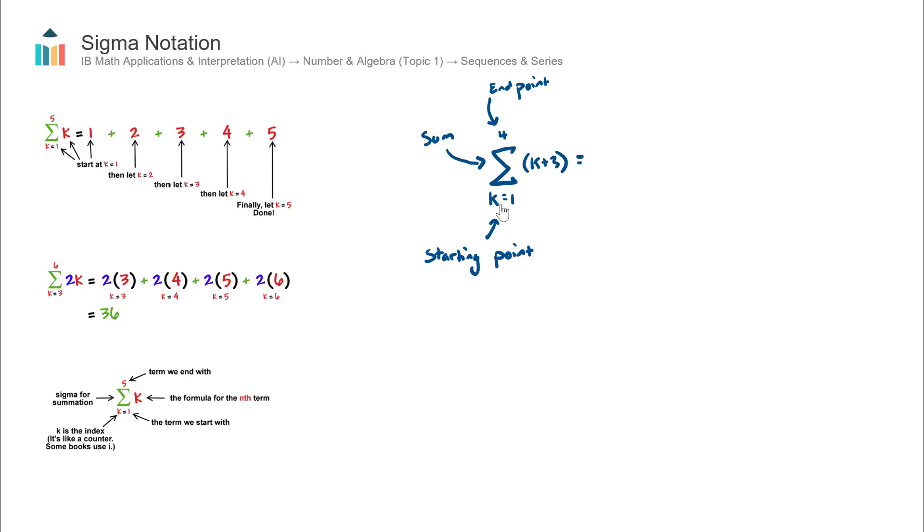So what does this mean? Well, we have this formula here, k plus 3. We're going to start at a k value of 1, and we're going to end at a k value of 4. Let's talk through how we compute this.